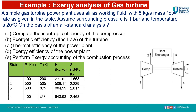This table provides all the values; the pressure is around 1 bar and the ambient pressure and temperature is given. On the basis of the air standard analysis, we need to calculate the isentropic efficiency of the compressor, exergy efficiency of the turbine, thermal efficiency of the whole plant, exergy efficiency of the whole plant, and perform exergy accounting of the combustion process in the heat exchanger. Pressure, temperature, enthalpy, and entropy at each point 1, 2, 3, 4 are given, and we need to calculate these efficiencies.